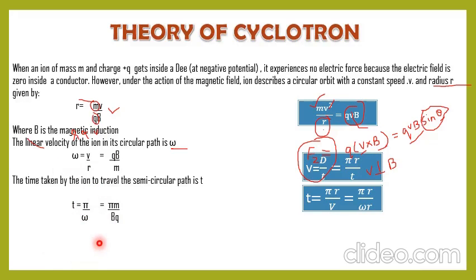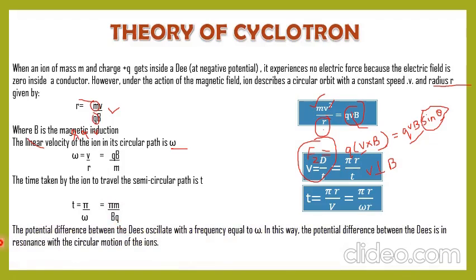The potential difference between the D's accelerates with frequency ω. The potential difference between the D's must be in resonance with the circular motion of the ion — meaning whenever the particle comes outside from the D, the frequency must change (the AC cycle must change). If this resonance does not occur, the particle will not be accelerated. So resonance between the particle's revolution frequency and the RF oscillator frequency is essential.